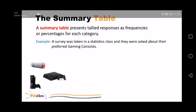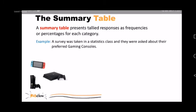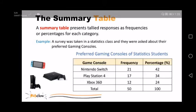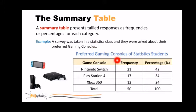For example, a survey was taken in a statistics class and they were asked about their preferred gaming consoles. By tallying the response for each gaming console and organizing them on a table, we have now the summary table for preferred gaming consoles of statistics students. A summary table helps you see the differences among the categories by displaying the frequency amount or percentage of items in a set of categories in a separate column. It's also important to write proper titles and column labels.